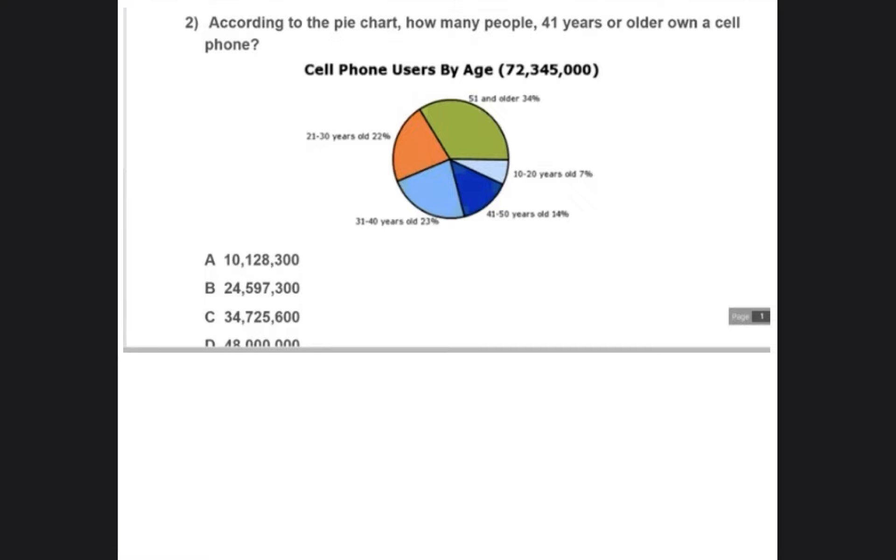So we're going to look at our pie chart and see, 41 years or older. So you're probably going to go to this one. So you're going to assume that 41 to 50 years old, that's 41 years or older, own a cell phone. And that's 14%, 14% of the total amount of cell phone users.